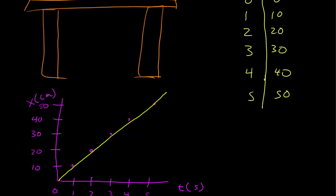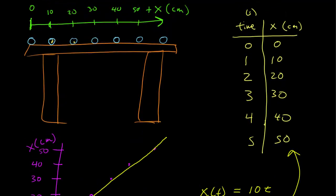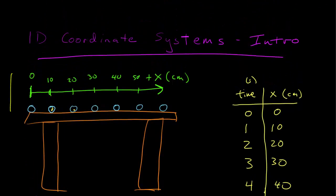And now I finally can have a mathematical representation of that event. Its position as a function of time was equal to 10 times t, where 10 is in centimeters and t is in seconds. For each second, I can check this reproduces the table. Now I have an accurate mathematical representation of that event, and where that comes from is the mapping of a coordinate system onto the event that you want to describe.